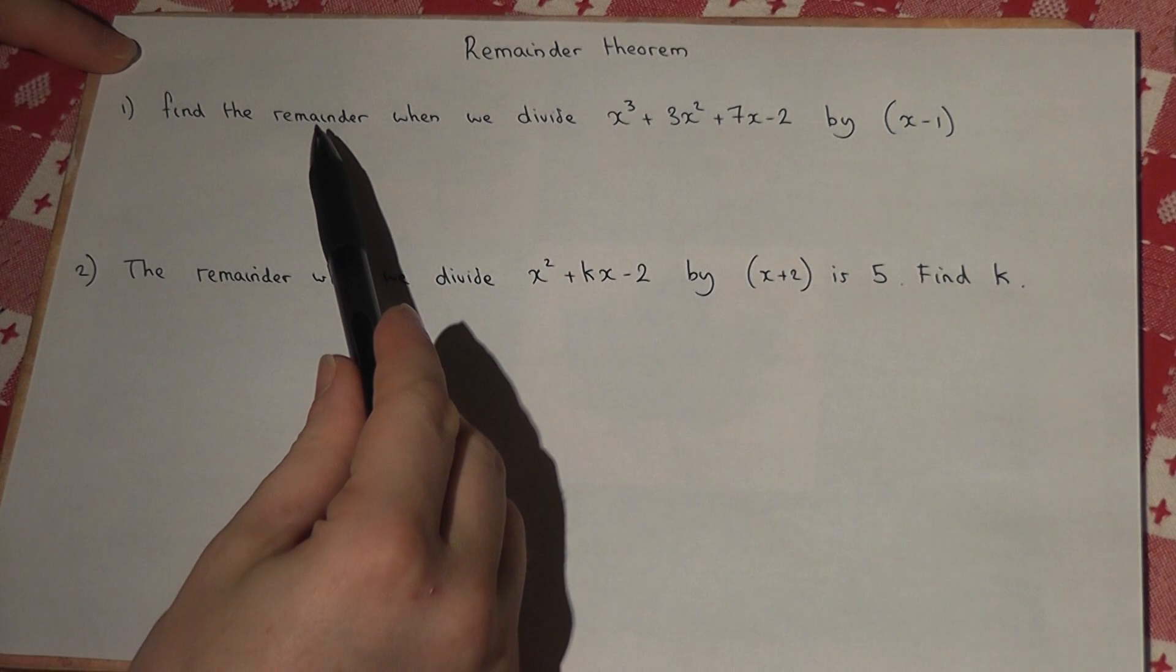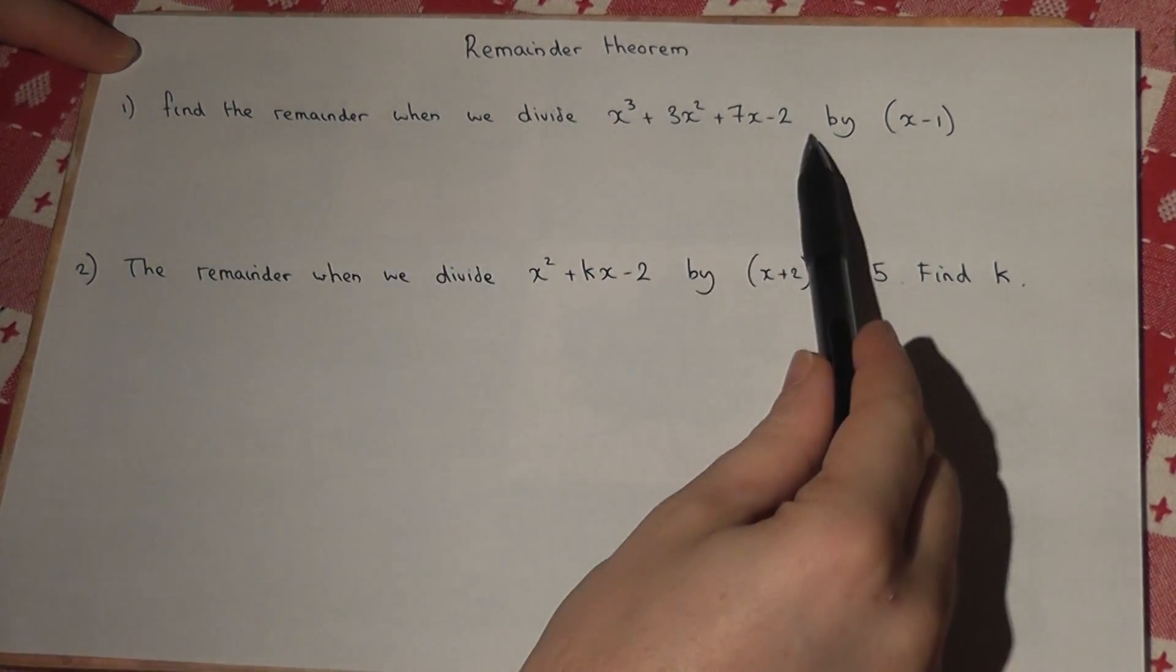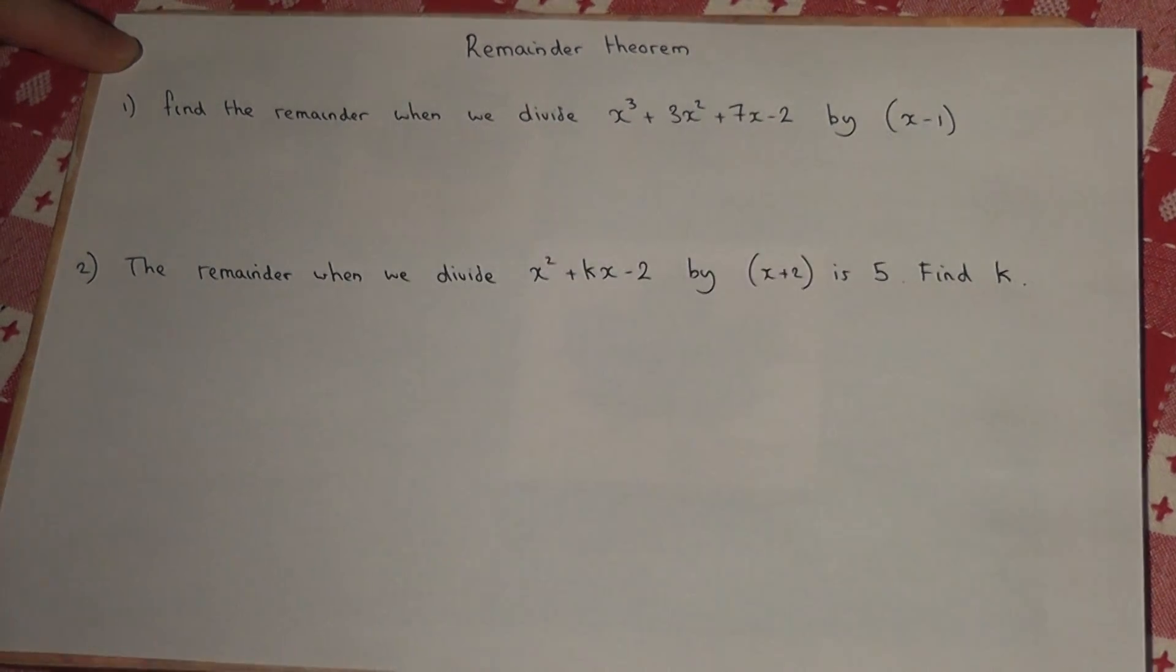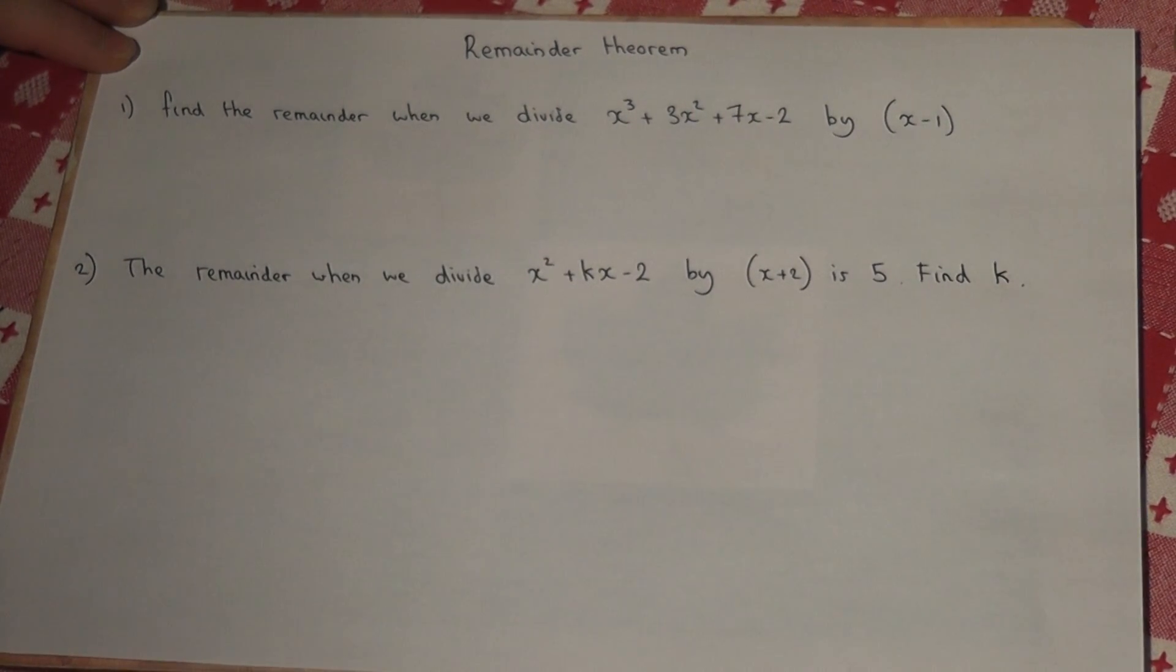If we want to find a remainder when we divide a polynomial by some expressions such as x minus 1, there's a trick which is called the remainder theorem.